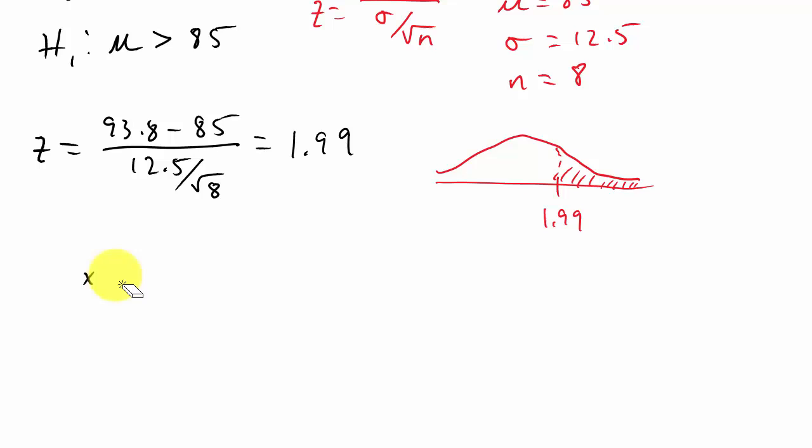The p-value is the probability that x bar is greater than 93.8, which is equal to the probability—and we took our x bar, we converted it to a z value—so z is greater than 1.99.